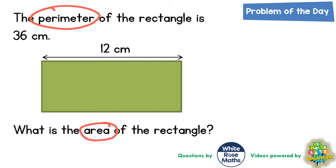So let's have a read of what we've got. It says the perimeter of the rectangle is 36 centimeters. Now remember perimeter is the distance all the way around the outside, so all the way around the outside like that. And we are asked what is the area of the rectangle.